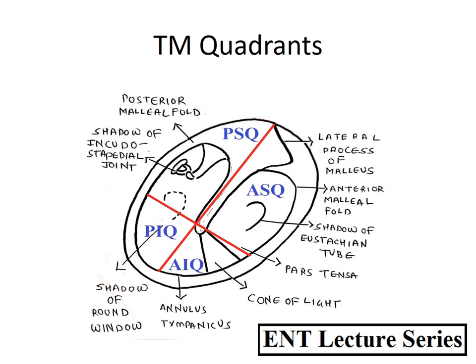By this division, the tympanic membrane is divided into four quadrants: anterior superior, anterior inferior, posterior superior, and posterior inferior. Any pathology in the tympanic membrane is described with respect to these quadrants.